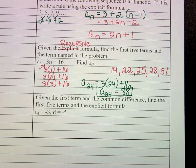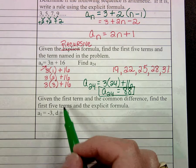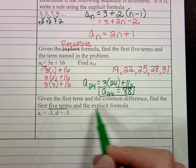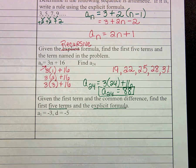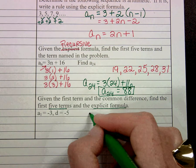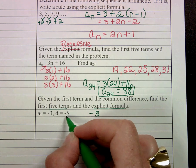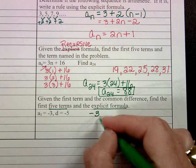Okay, last problem we'll look at together. It says, given the first term and the common difference, find the first 5 terms and the explicit formula. Well, we know the first term is negative 3, and we know the common difference is negative 5. So that means we're subtracting 5 every time.